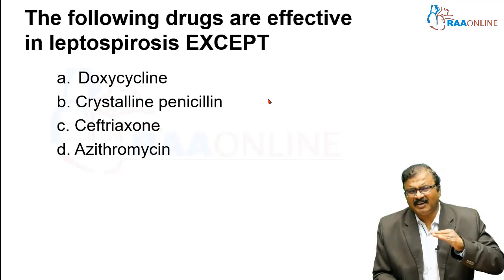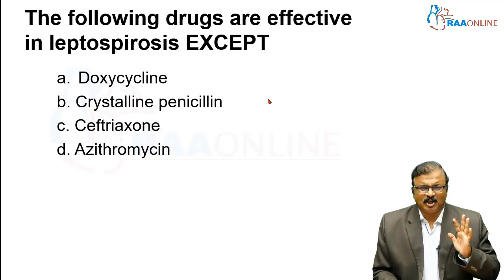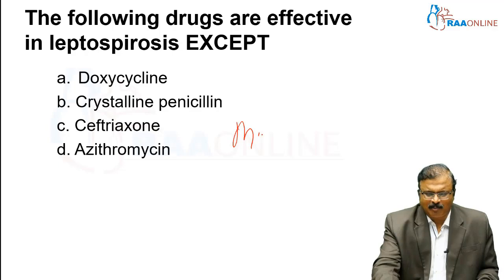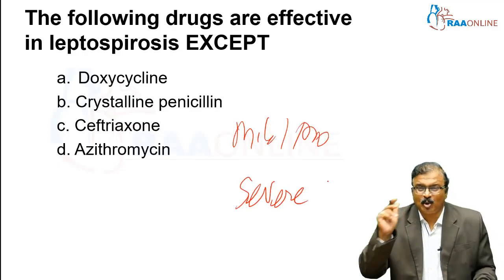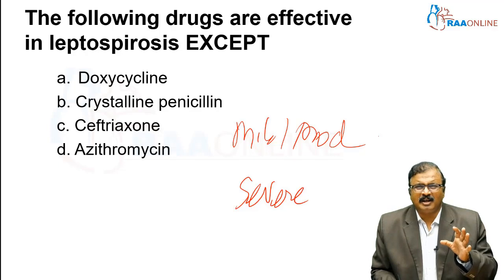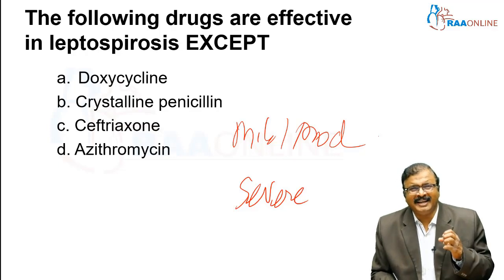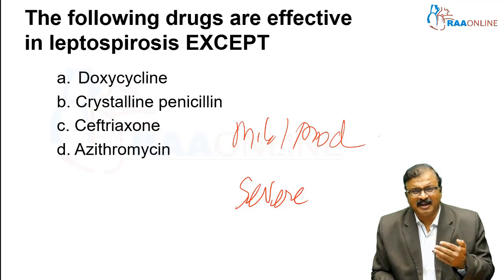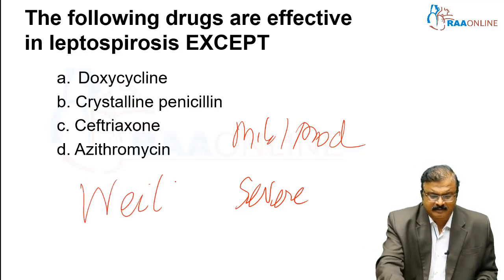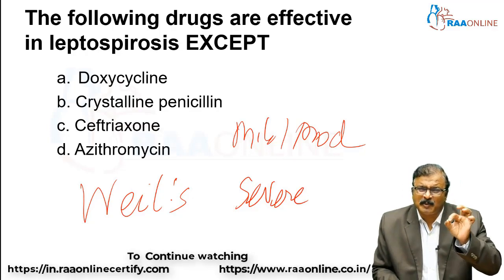The following drugs are effective in leptospirosis — this is also important clinically and for MCQs. We have to know how to treat leptospirosis. Leptospirosis ranges from mild or moderate to severe — this has to be kept in mind. Mild and moderate means infection without affection of the kidney, with only mild hepatitis — no severe hepatitis or hepatic failure. If there is renal involvement, it is called Weil's disease or severe leptospirosis, associated with specific Leptospira species.